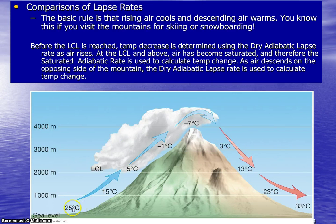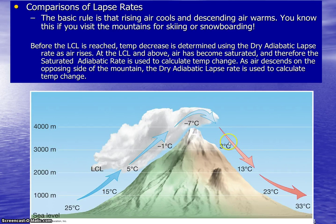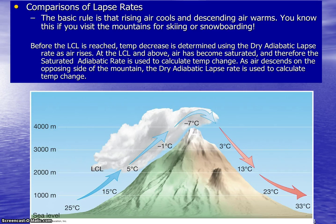Hopefully this helps you understand when to use the dry adiabatic lapse rate to calculate temperature, how you switch to the saturated adiabatic lapse rate at the lifting condensation level, and then switch back to the dry adiabatic lapse rate as the air begins to descend. In the next video, we will be taking a look at precipitation mechanisms, so understanding this should help you with that next section.